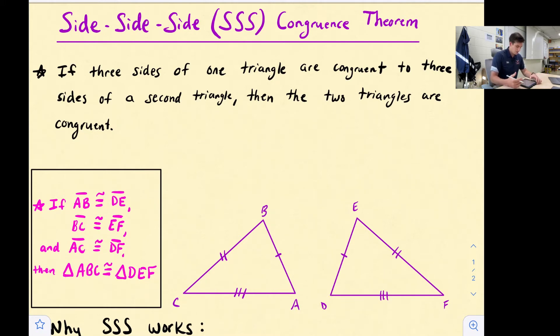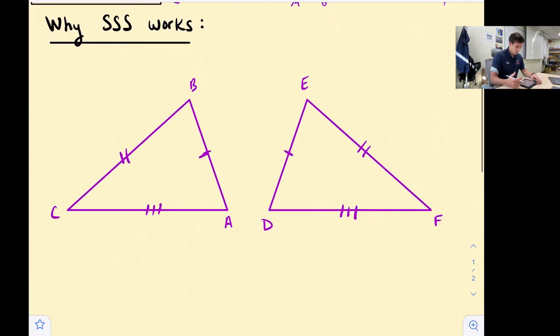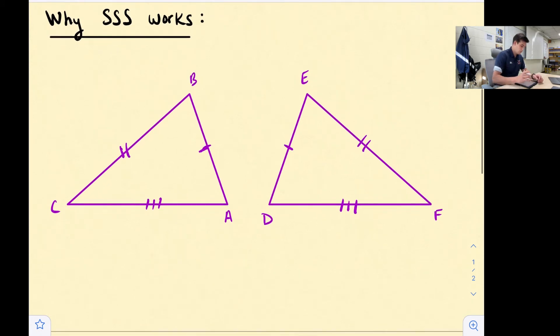So why does this work? Remember, for congruent shapes we should be able to go from one shape to the other using what are called rigid motions. That would be a transformation like a translation, reflection, or rotation. So I'm going to take my triangle ABC here and we're going to translate it and rotate it so that it maps side AC to side DF.